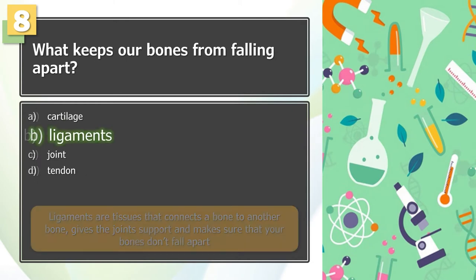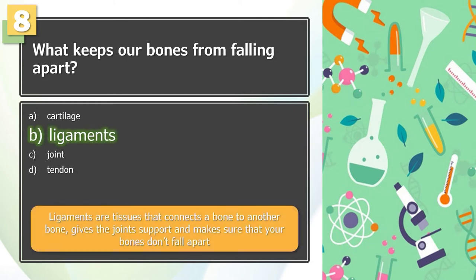The answer is B. Ligaments are tissues that connect a bone to another bone, give the joints support, and make sure that your bones don't fall apart.